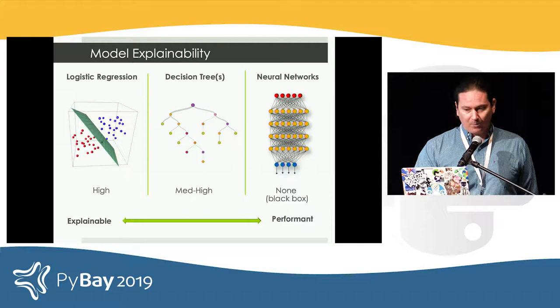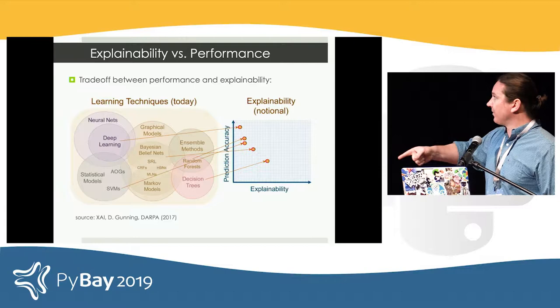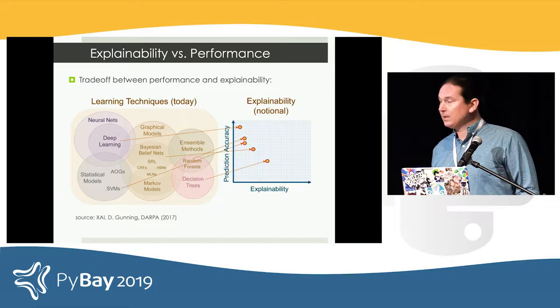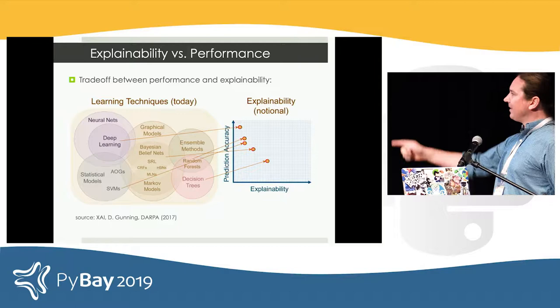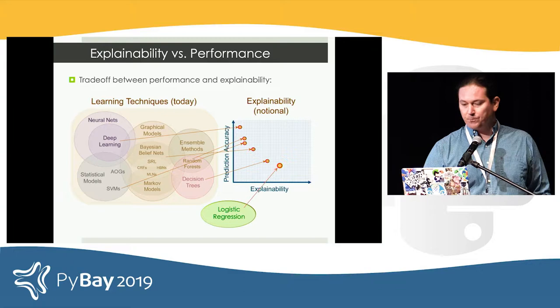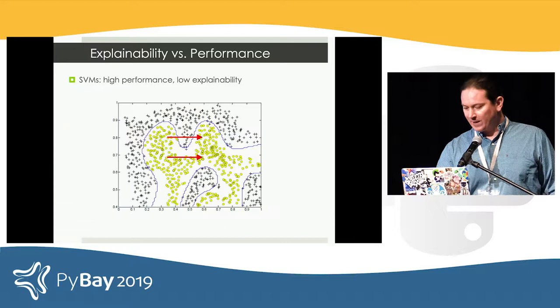They're even called black boxes. I took this slide from a DARPA publication in 2017, basically illustrating the trade-off between the accuracy of a model and its explainability. At the top you have neural networks. Down here you have logistic regression, which is very explainable but not as performant as the other models. And if you've ever worked with SVMs, good luck explaining those.